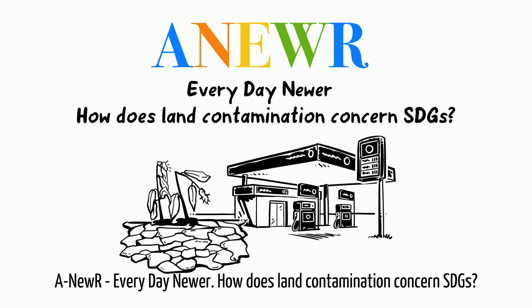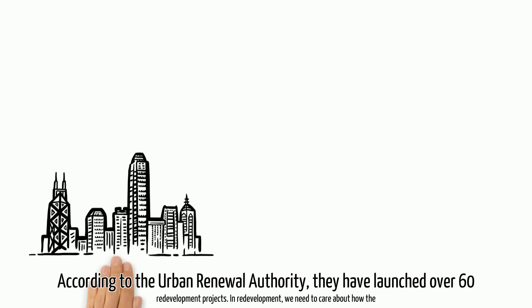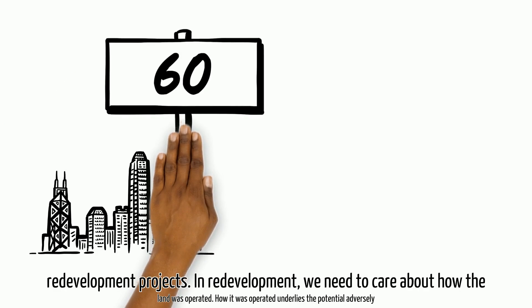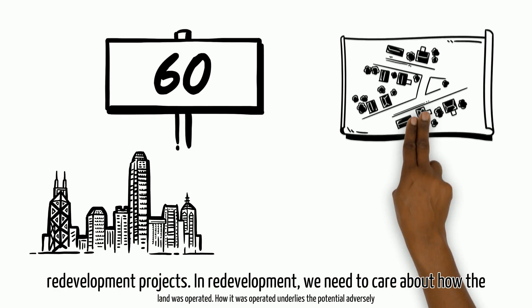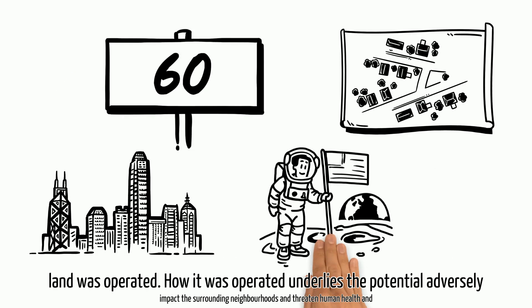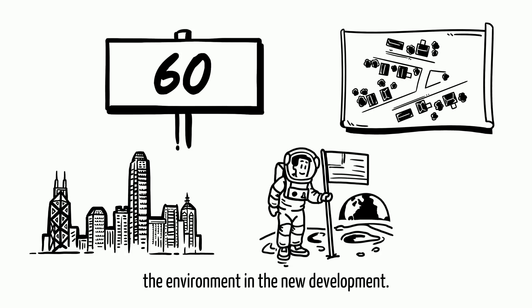How does land contamination concern SDGs? According to the Urban Renewal Authority, they have launched over 60 redevelopment projects. In redevelopment, we need to care about how the land was operated. How it was operated underlies the potential to adversely impact the surrounding neighborhoods and threaten human health and the environment in the new development.